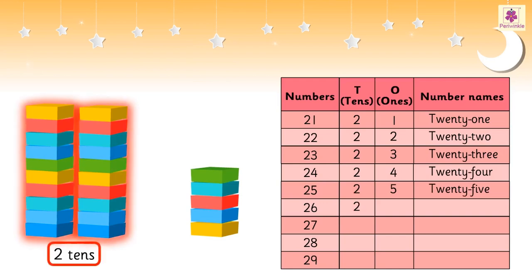Two tens and six ones is 26. Two tens and seven ones is 27.